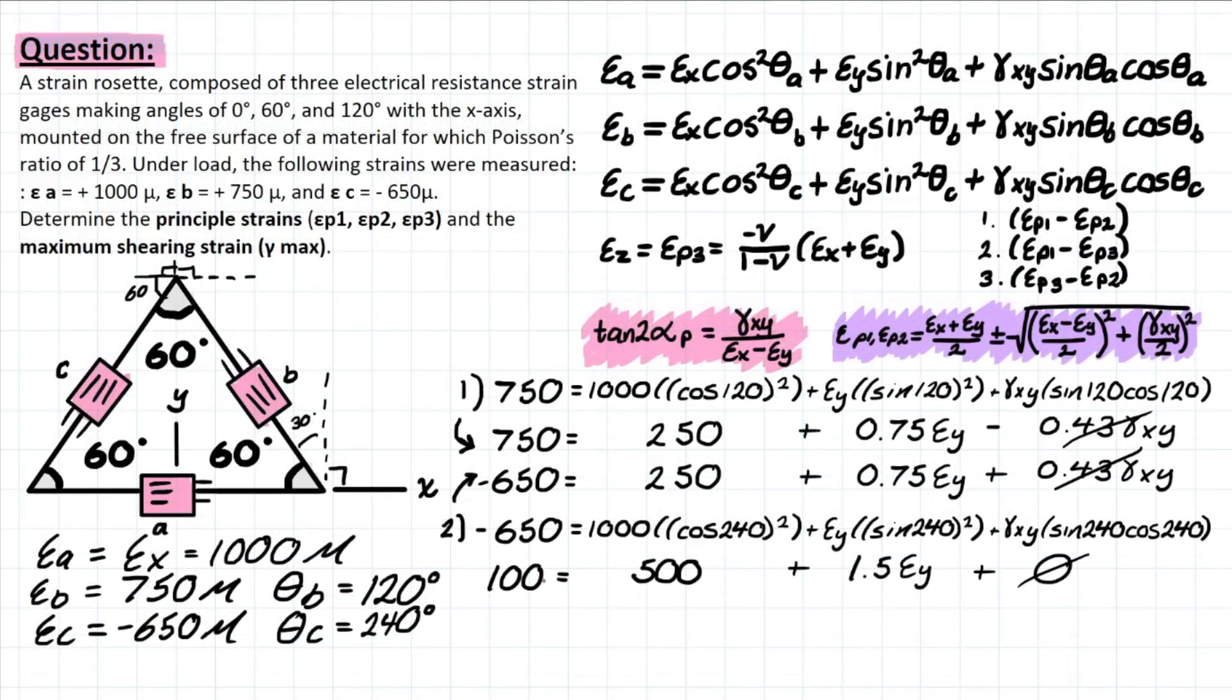So adding these two together, you're going to be left with another equation that looks like this, just epsilon_y left over. And solving that, you're going to be left with a value for epsilon_y equals to negative 266.7.